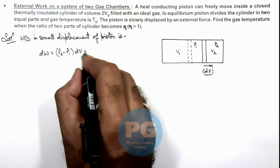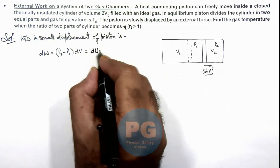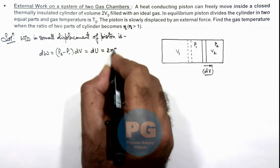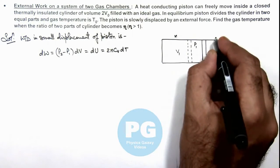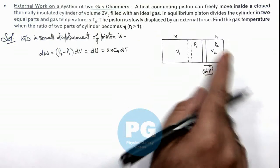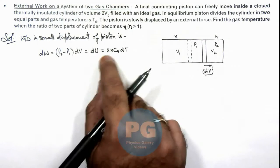So this can be written as dU, which is increase in internal energy which can be written as 2nCᵥdT, where n moles are there in each part. So totally the internal energy will increase by 2nCᵥdT.